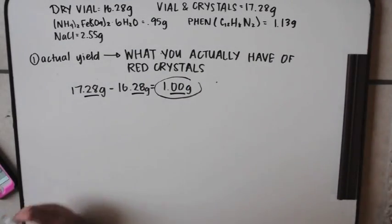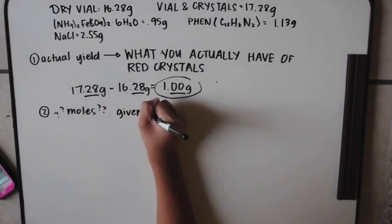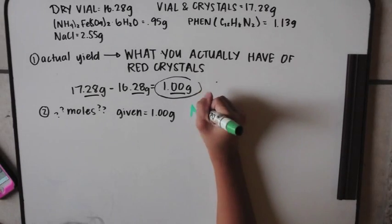Take note that would be about three sig figs because it's asking how precise when you're subtracting. Number two asks for the number of moles. We know from number one that we have one gram.